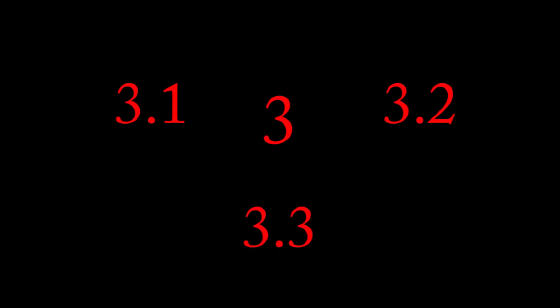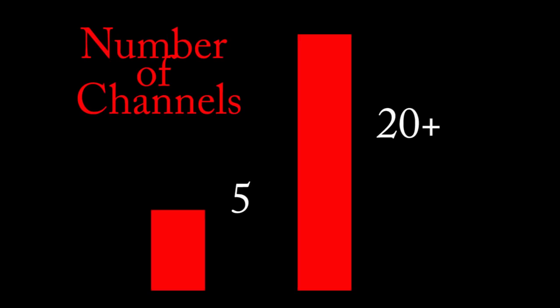Digital over-the-air (OTA) is more expansive than analog ever was. Analog only allowed for one channel per broadcaster, but digital allows for multiple sub-channels. Now instead of just channel 3, there's 3.1, 3.2, 3.3, etc. Where there used to be only five channels available in the city, now there are 20 or more without adding more broadcasters.